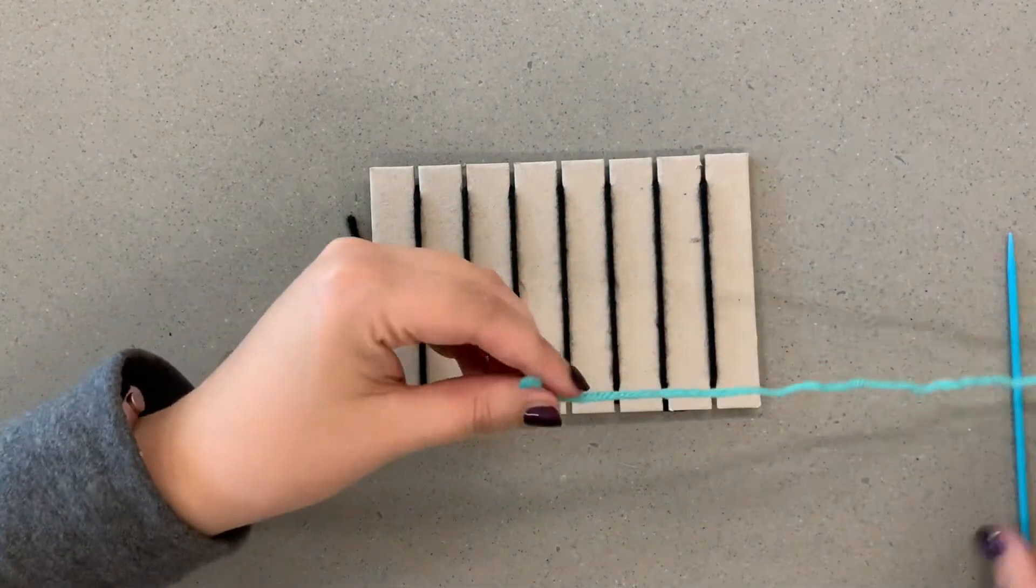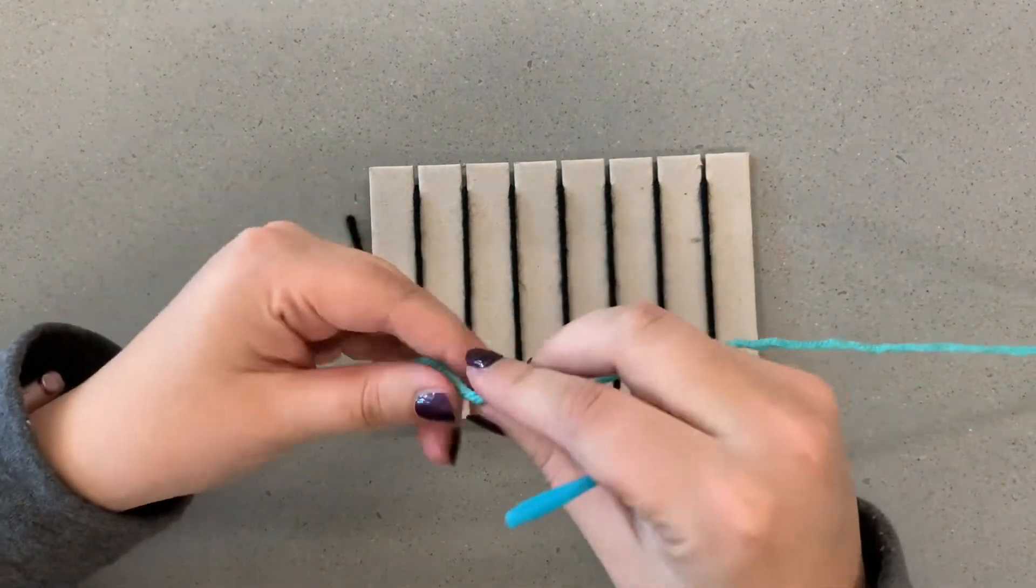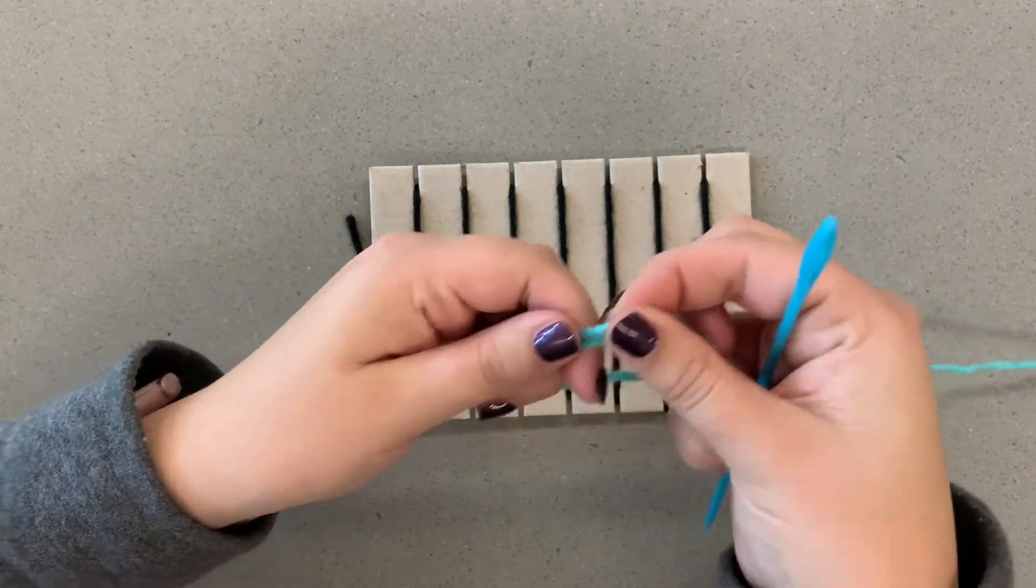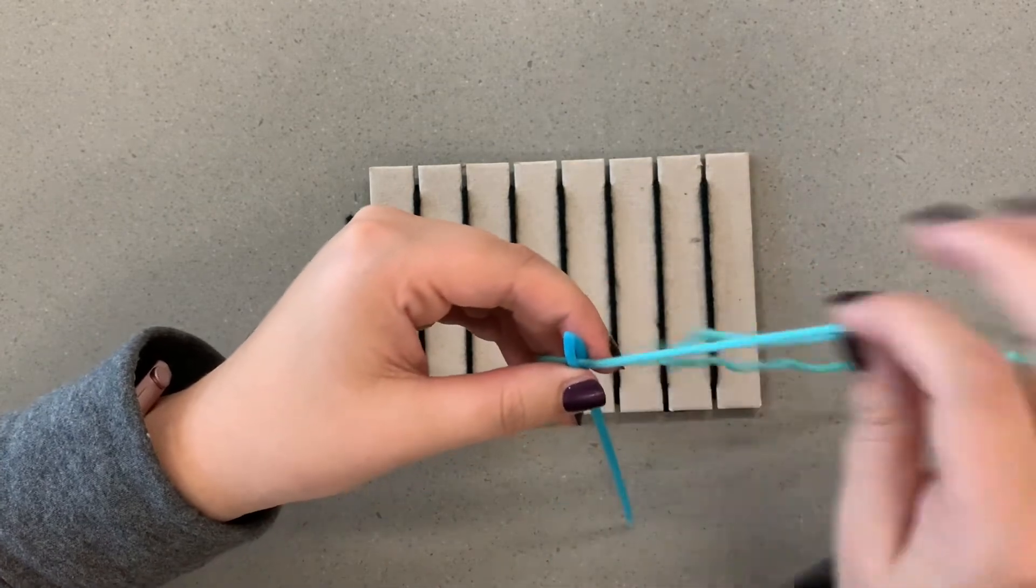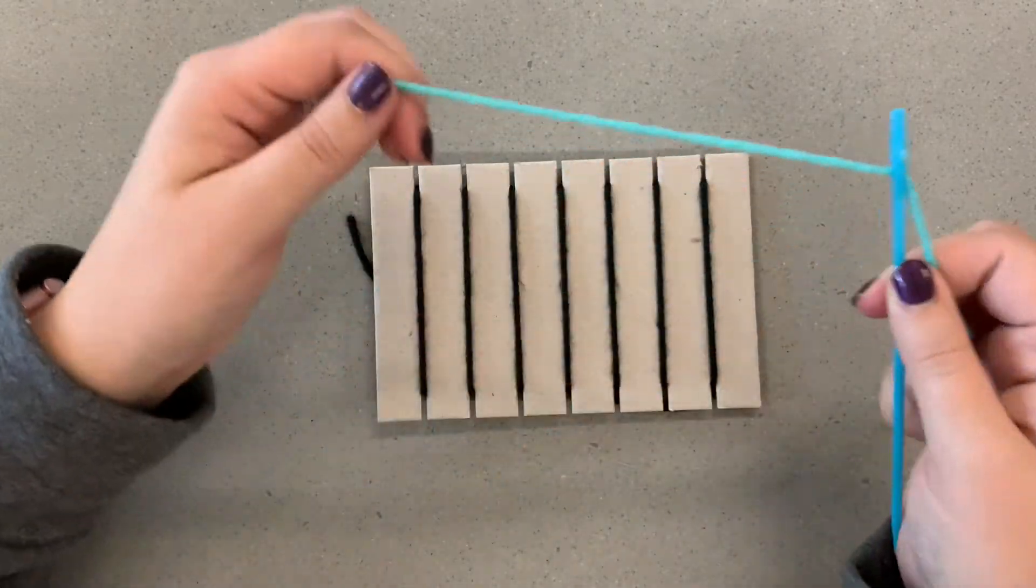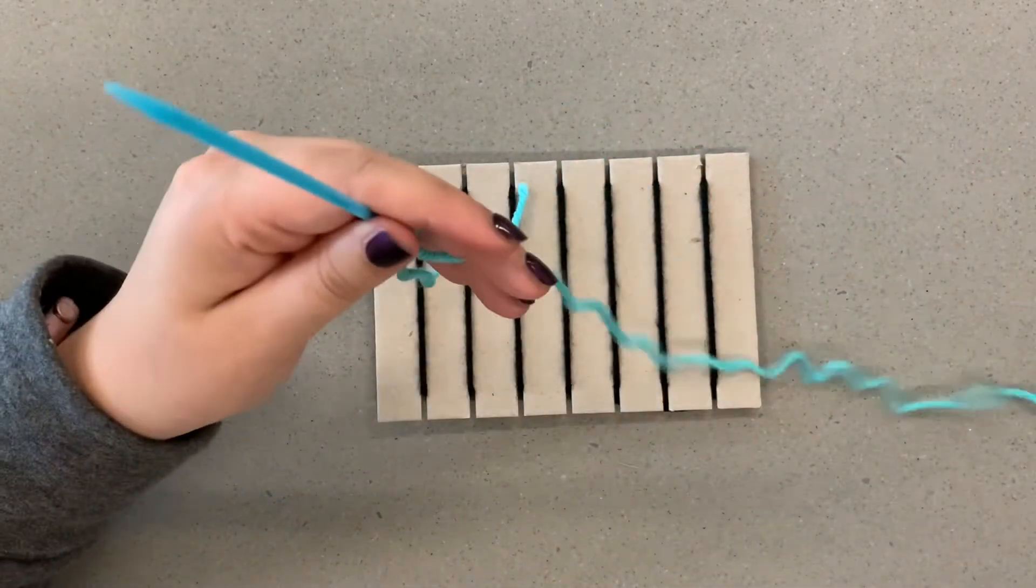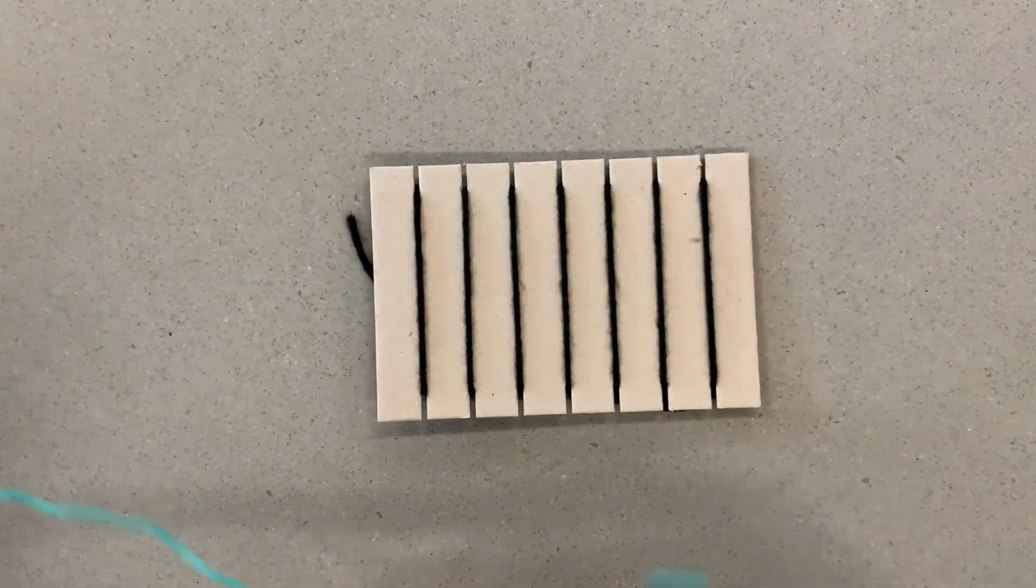So now we are ready to start weaving. I picked turquoise for mine and I am choosing to use the needle. If you don't want to use the needle, you don't have to. It does make it easier, but some people prefer not to. So notice how I've got this tail hanging off of there. You do not need to knot it onto your needle.